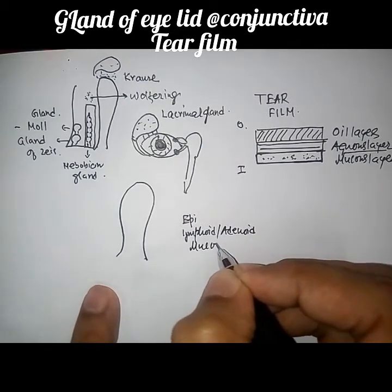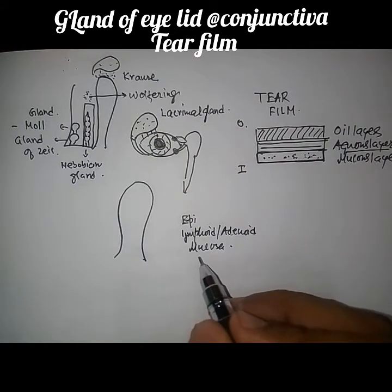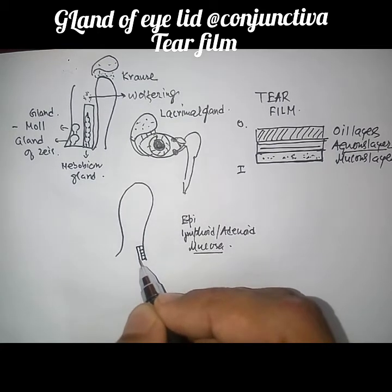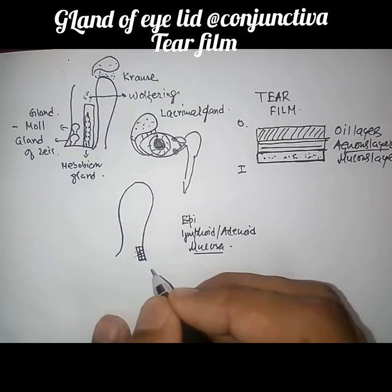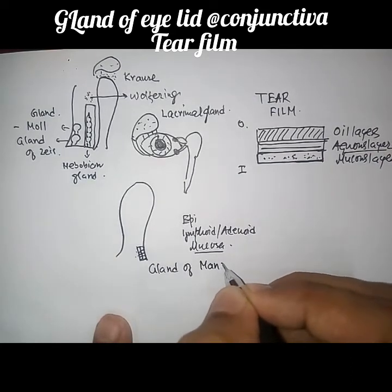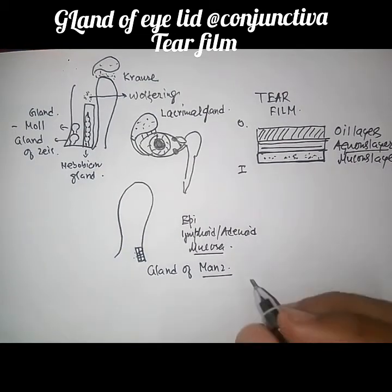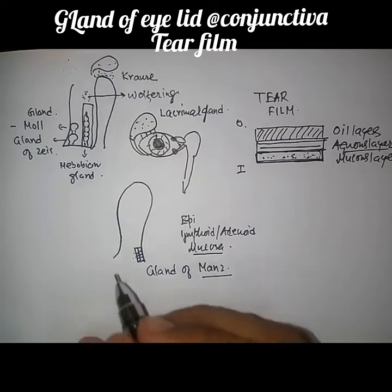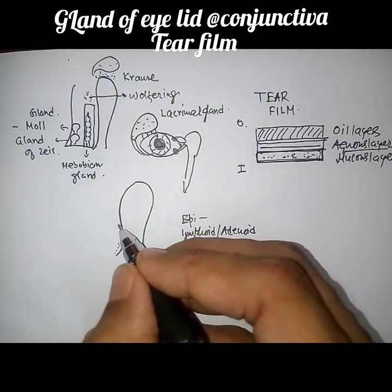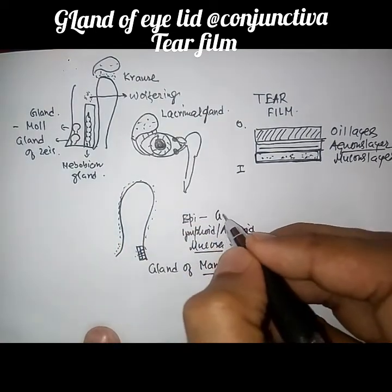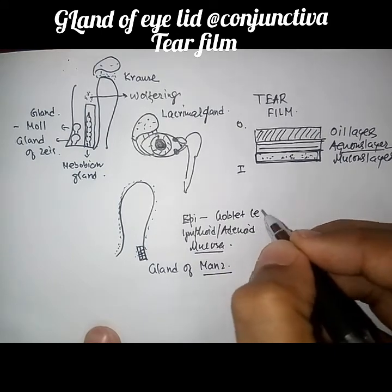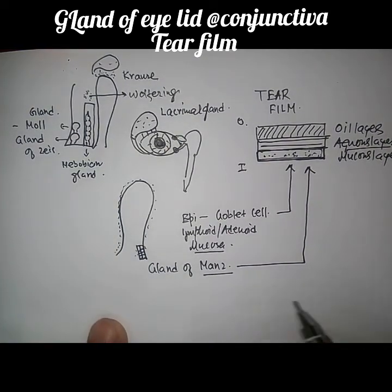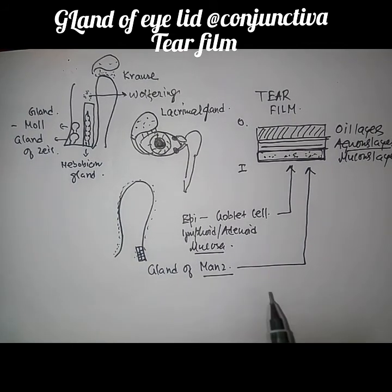In the limbal epithelium there is a gland known as the gland of Manz, which is a mucus-secreting gland. Secretion of this gland contributes to the mucus layer, which is the inner layer of the tear film. Additionally, in the epithelium of the conjunctiva there are goblet cells, which are unicellular mucus-secreting glands that also contribute to the formation of the mucus layer. This concludes the discussion of the glands of the eyelid and conjunctiva.